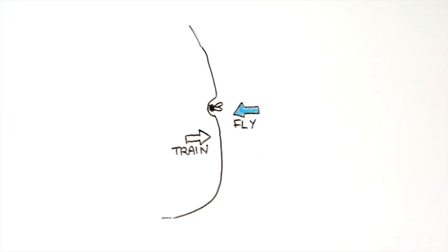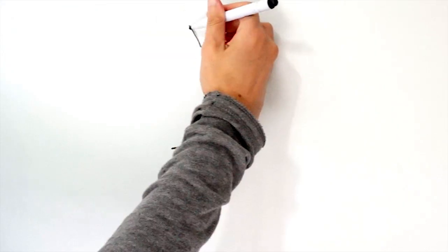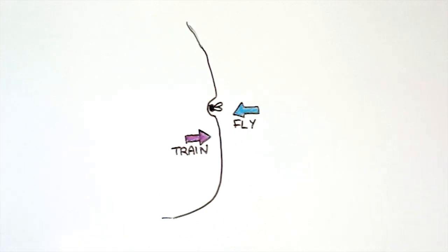As the fly has a very small mass, the fly will quickly accelerate up to the speed of the train, and this happens over the distance of the elastic deformation.